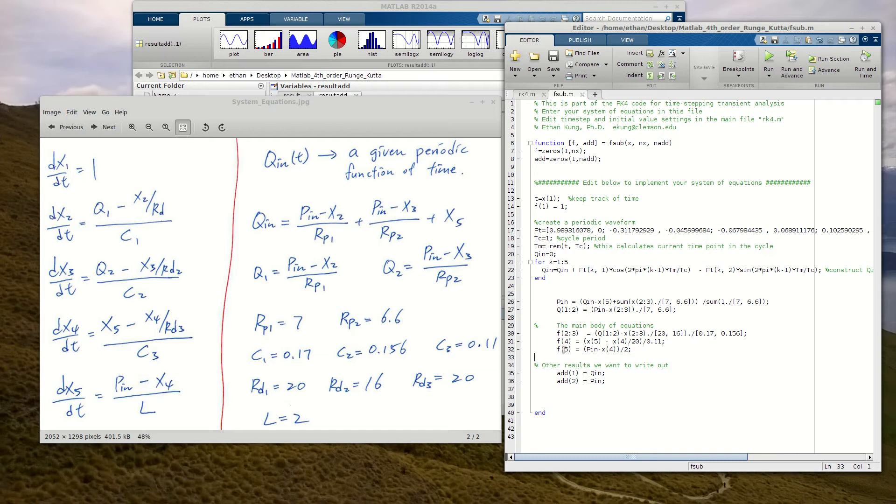So in this f array here, I want to assign this f array such that I enter all of my differential equations. So f5 is dx5 dt, which is described by this equation, pin minus x4 divided by L. And so that's what I put here, that's what I want to put here for x5, which is pin minus x4 divided by L, which is 2. So what you want to make sure is just by the end of this file, you want to prescribe all of your differential equations into your f arrays.